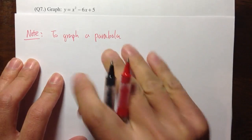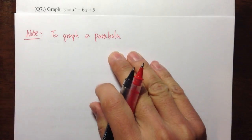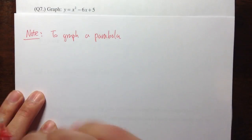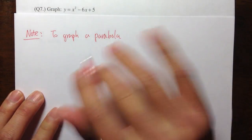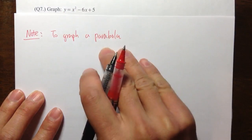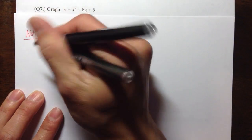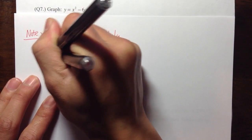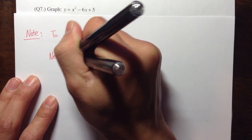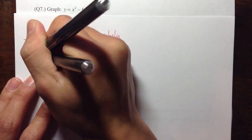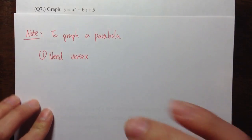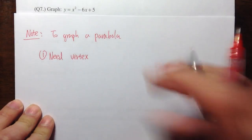Let me start off by making some notes. What do we need to know in order to graph this equation? So to graph an equation like this, a parabola, we need the vertex. This is the first thing that we need — we need the vertex of the parabola.